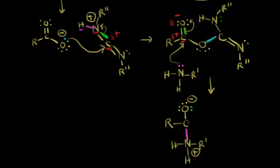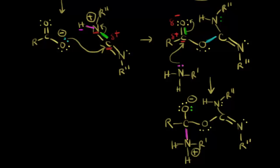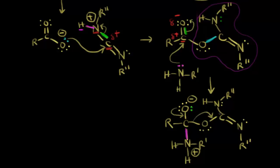We still have our carbon bonded to this oxygen with lone pairs of electrons, and then a carbon, a nitrogen, R'' group, a hydrogen, lone pair of electrons, double bonded to the other nitrogen with R'' group. The use of DCC gives you a good leaving group — all this stuff over here is an excellent leaving group. If we reform our carbonyl by moving these electrons in, these electrons come off onto the oxygen and can pick up a proton. We have an excellent leaving group.